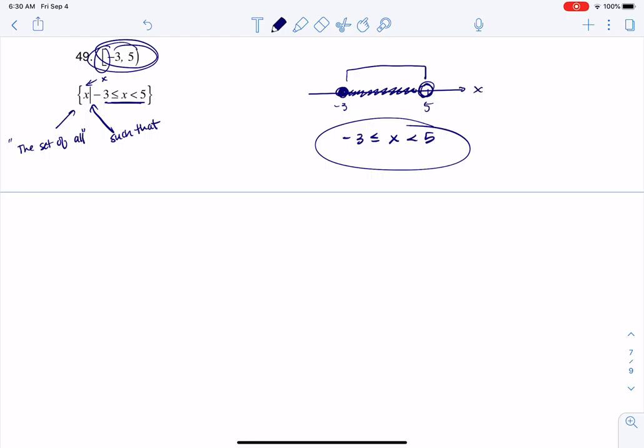So for example, if I wanted to just do a different interval, let's say I wanted to go from like 1 to 18, right? And we had an open dot here and a closed dot here. I would say this was the set of all x such that 1 is less than x is less than or equal to 18.